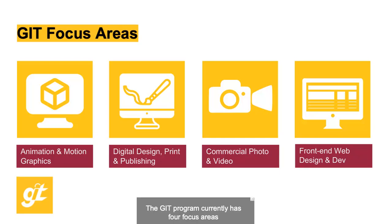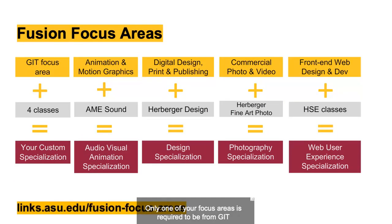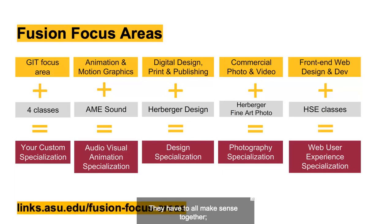The GIT program currently has four focus areas: animation and motion graphics, digital design and print and publishing, commercial photo and video, and front-end web design and development. Only one of your focus areas is required to be from GIT. The other focus areas can be a combination of any four classes at the university, of which two are upper division, and they all need to make sense together with some sort of theme.